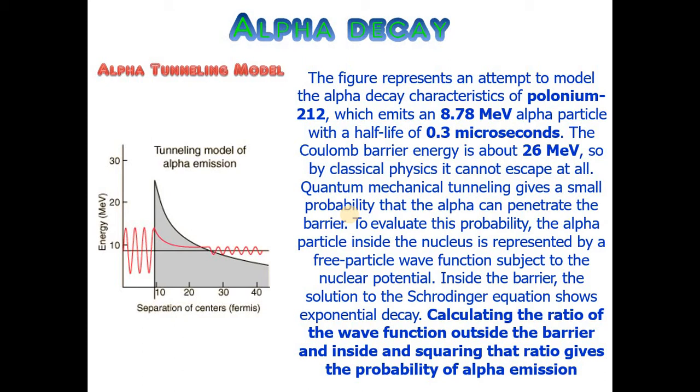To evaluate this probability, the alpha particle inside the nucleus is represented by a free particle wave function subject to the nuclear potential. Inside the barrier, the solution to the Schrodinger equation shows exponential decay. Calculating the ratio of the wave function outside the barrier and inside, and squaring that ratio, gives the probability of alpha emission.